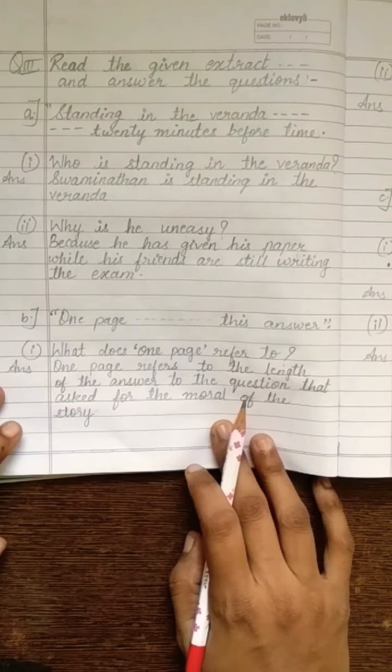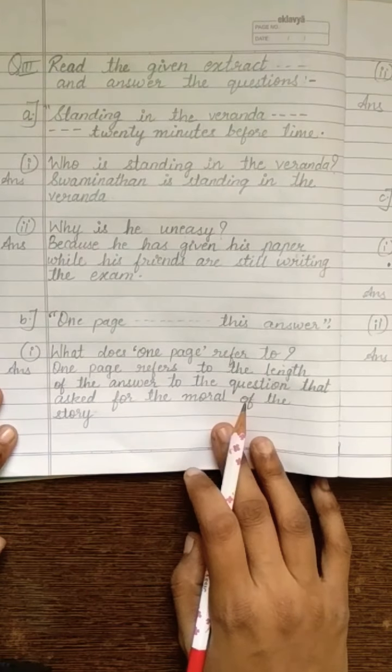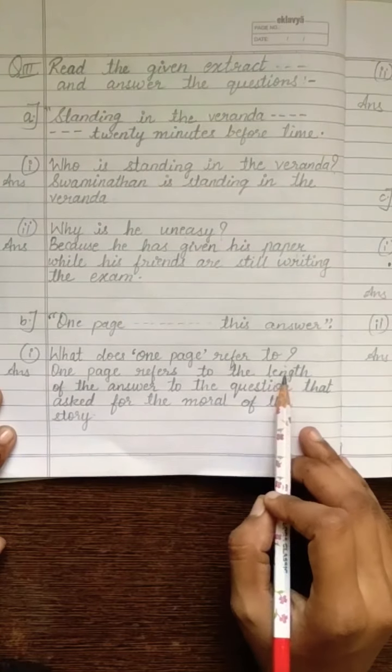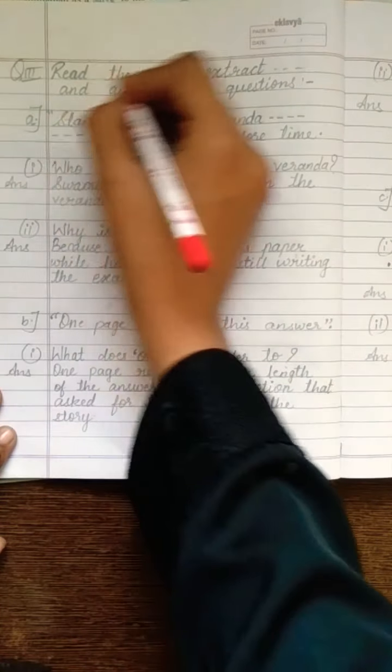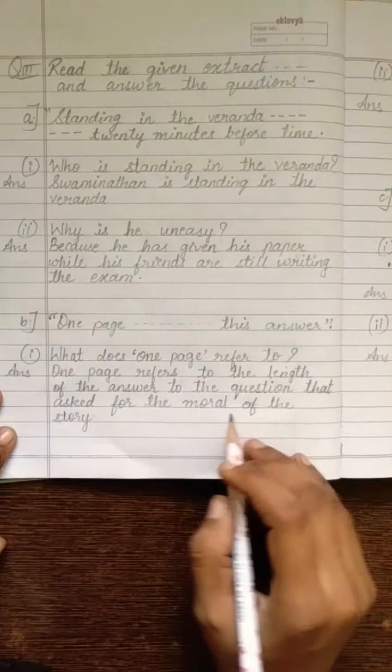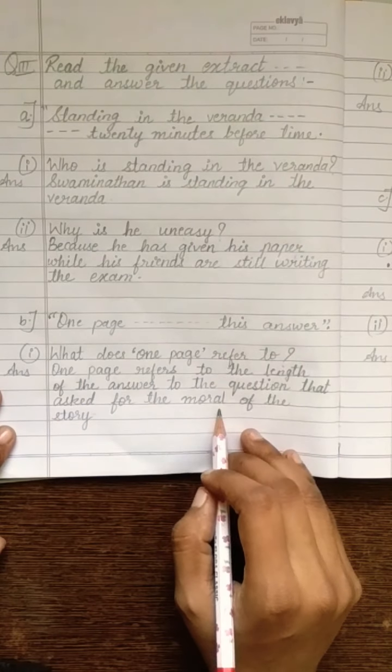One page refers to the length of the answer to the question that asked for the moral of the story. So, one page, kise refer kar raha hai humari story mein? It is referring to the length of answer. Matlab, students ne kitna answers likha hai? For which question? For the moral question.